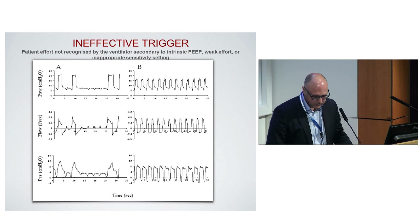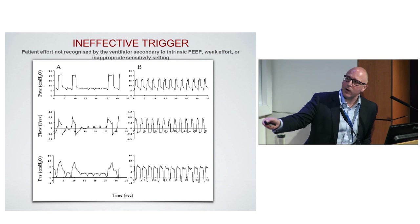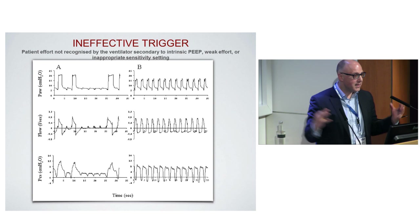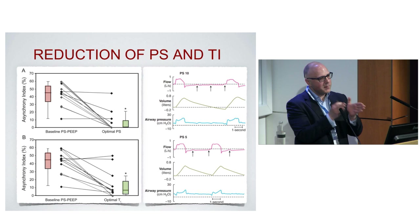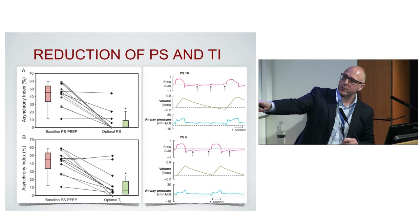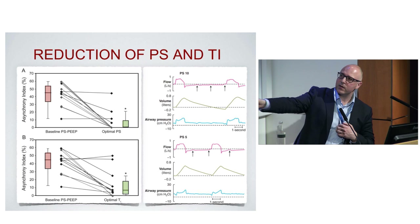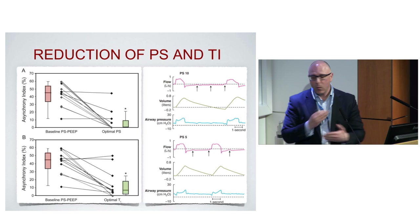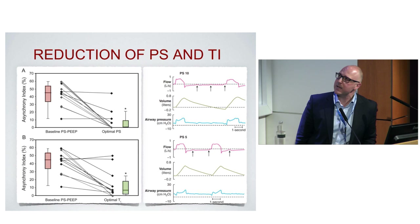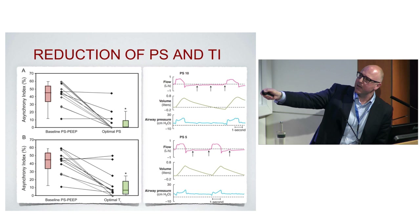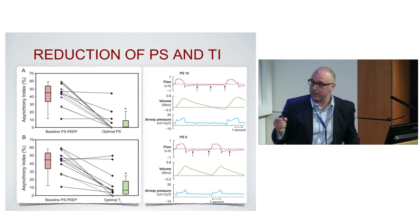This study shows that if you give a lot of pressure support — meaning large tidal volumes — it needs more time to exhale, and in the short expiratory period, auto-PEEP can develop. If you decrease pressure support from baseline to what is considered optimal, you can see asynchrony goes down. Similarly, if you decrease the inspiratory time, which is another way of reducing tidal volume, again asynchrony goes down. In graphical form, from pressure support 10 to pressure support 5, the number of missed breathing attempts goes down.